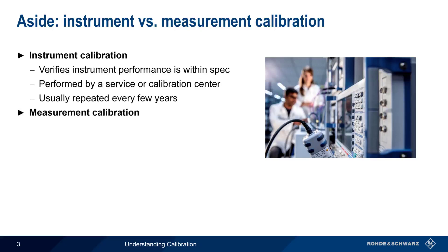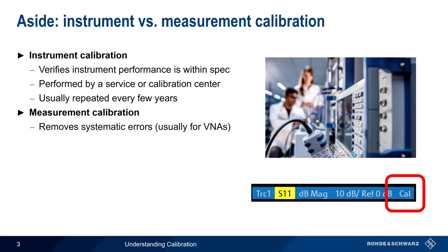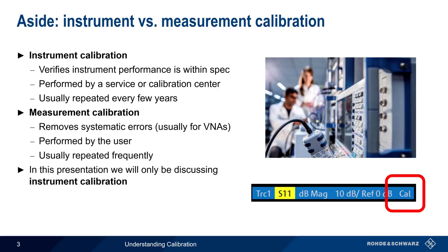A measurement calibration, on the other hand, is performed to remove systematic errors from a test setup, most often when making measurements with vector network analyzers or VNAs. It's always performed by the user and is repeated rather frequently — often before each measurement session, or at least before important measurements. In this presentation, we'll only be covering instrument calibration, so please see the separate presentation on VNA measurement calibration if you'd like to learn more.